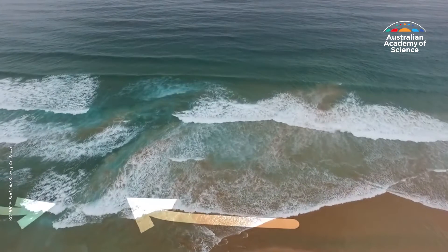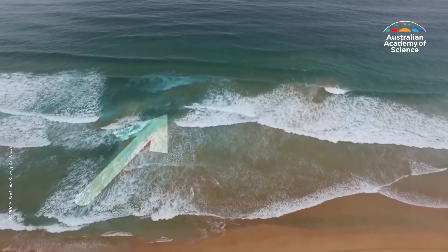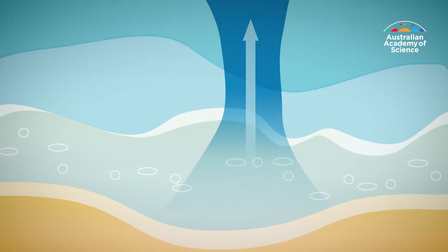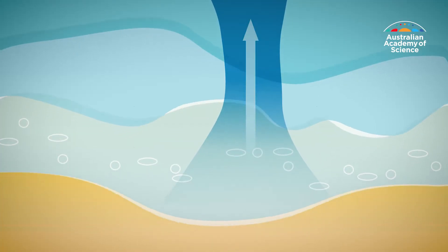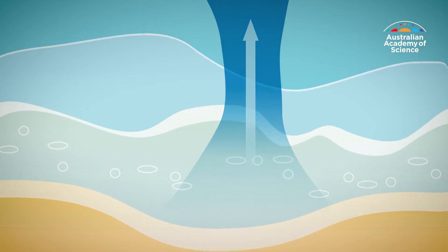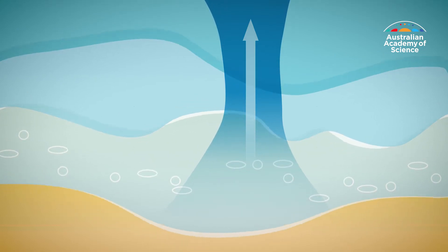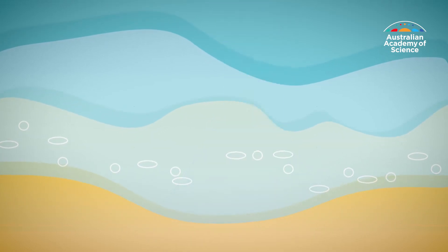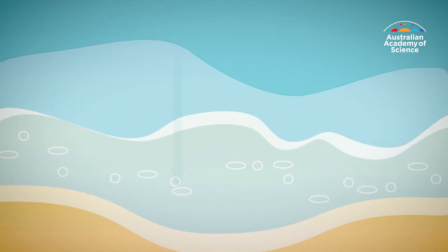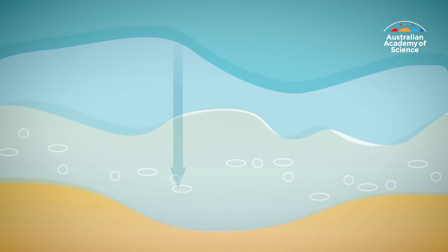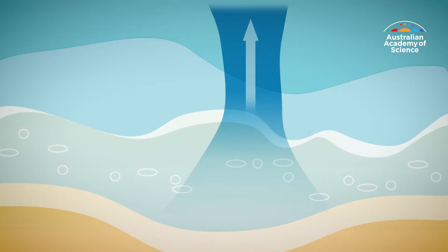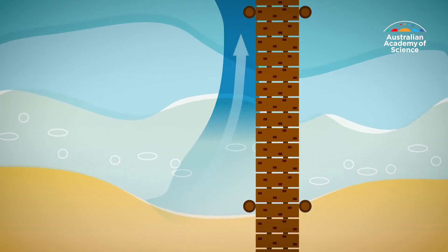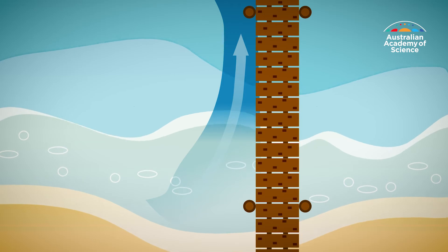Rips are strong, narrow currents characterized by waves breaking across a wide area. Channelized or fixed rips are the most common and look like dark gaps between areas of white water. They can occur and stay in the same place for days, weeks or even months. Flash rips are caused by large surf build-up in a short period of time and can appear suddenly without warning. Boundary or topographic rips occur next to headlands and structures like jetties.